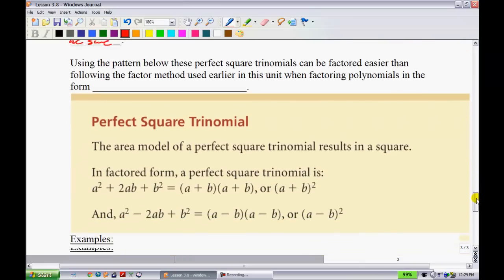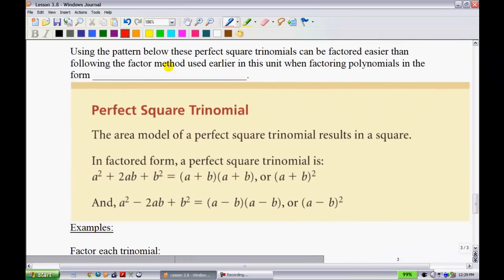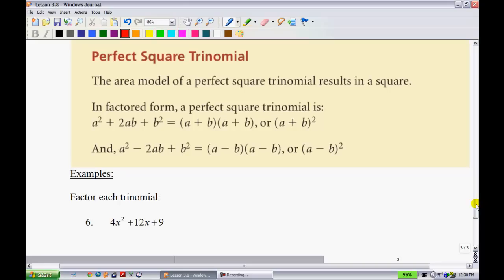So what I'm making reference to is back when I had a²-b². When I factored, I had one as positive and one as negative. Well, now I'm going to look at what happens when these both pop out and they're both negative or both positive. What happens in that scenario? So using this pattern below, these perfect square trinomials can be factored easier than following the factoring method we used earlier in this unit. You still can factor these using the old school method, the AC method, but it makes life a little bit longer than it needs to be.